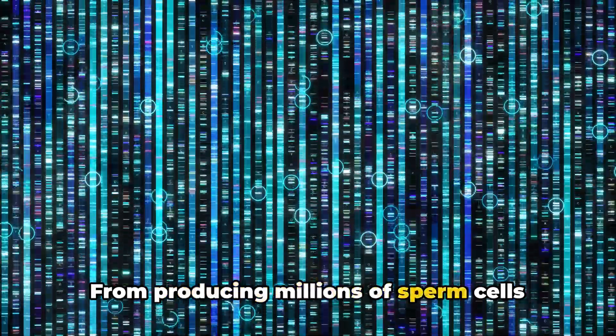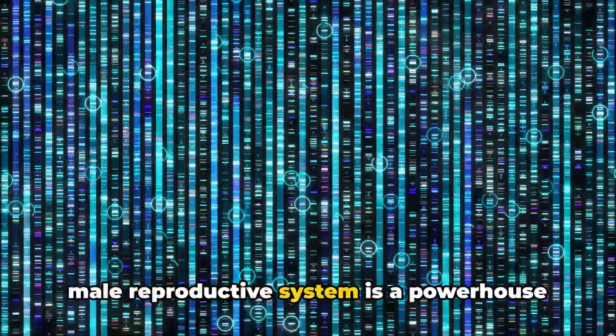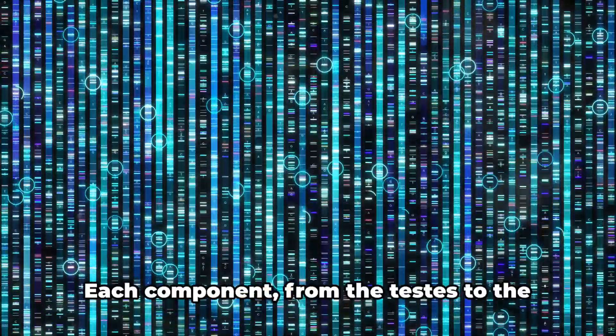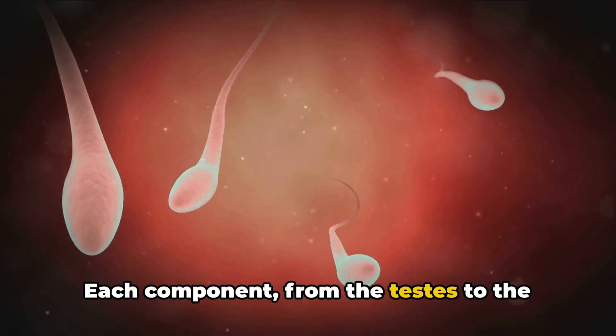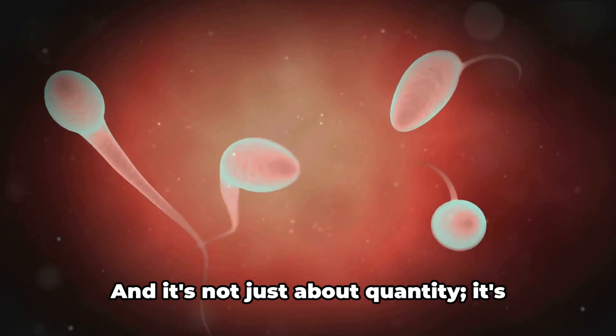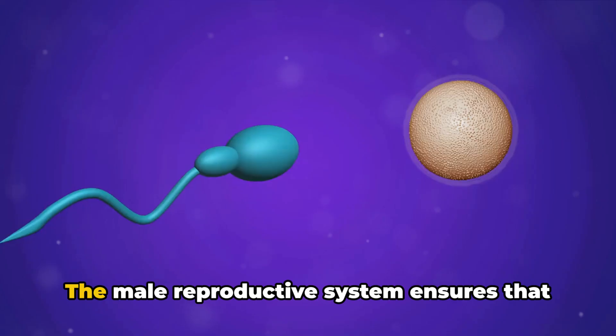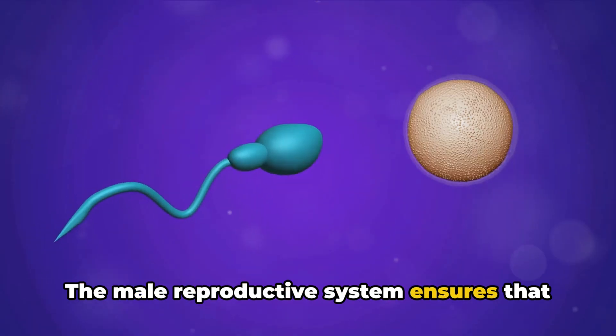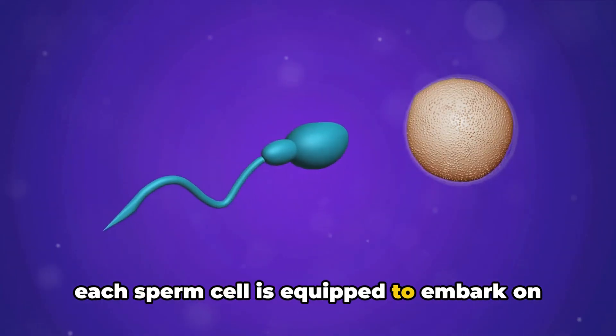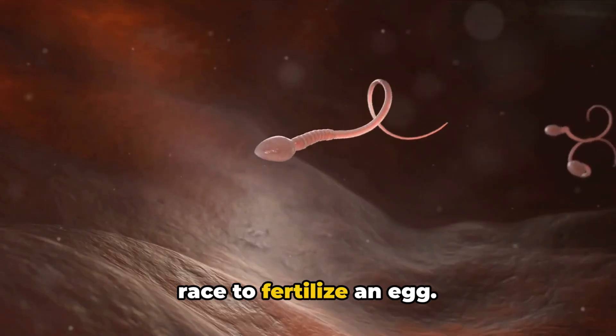From producing millions of sperm cells daily to ensuring their viability, the male reproductive system is a powerhouse of creation. Each component, from the testes to the prostate gland, plays an essential role in the production and delivery of sperm. It's not just about quantity, it's about quality too. The male reproductive system ensures that each sperm cell is equipped to embark on the most important race of its life, the race to fertilize an egg.